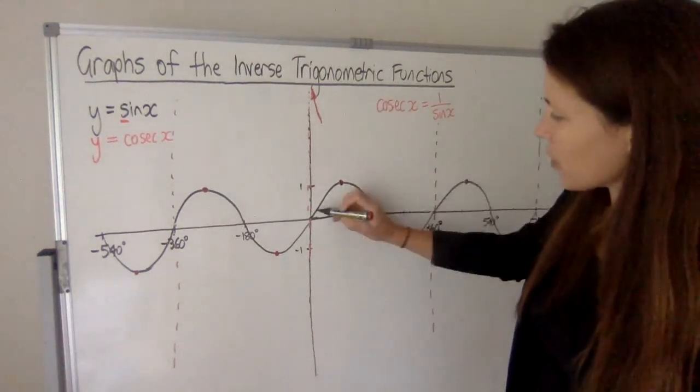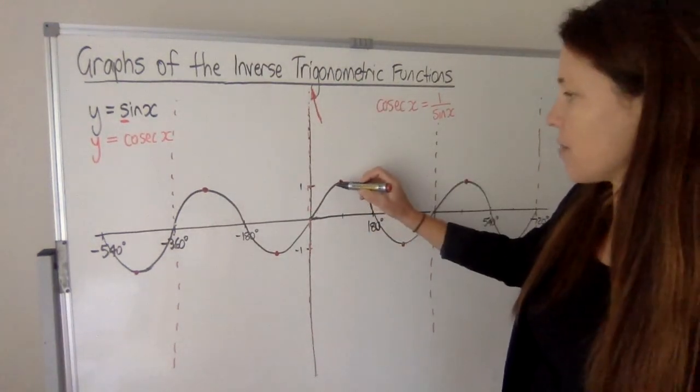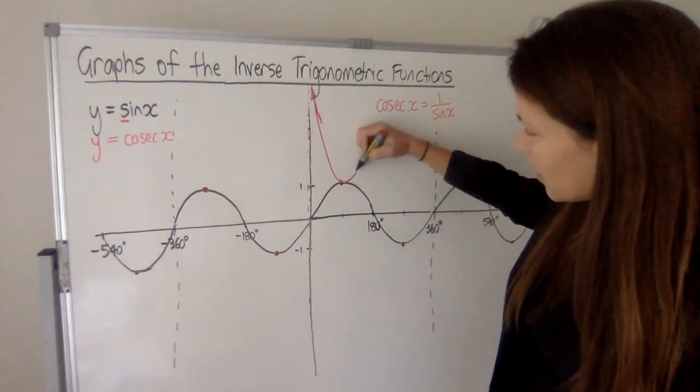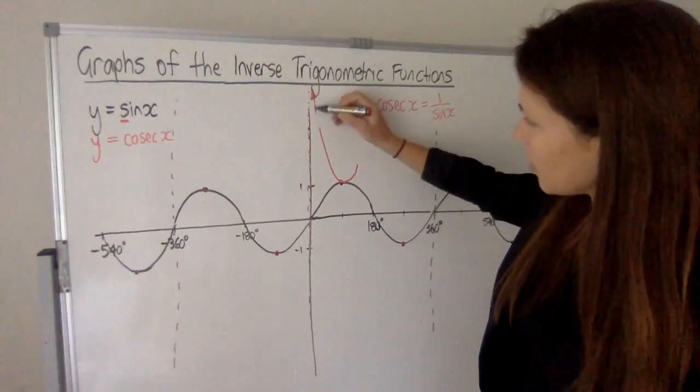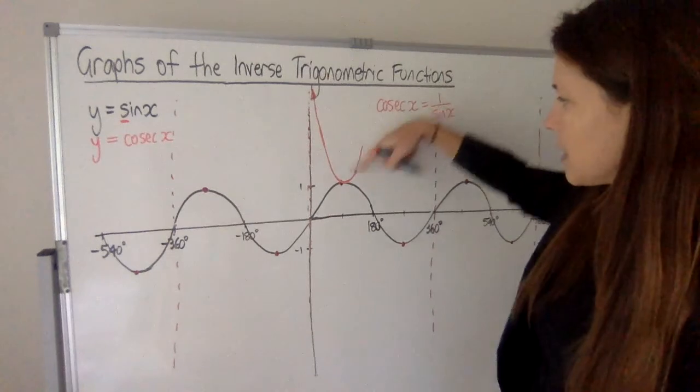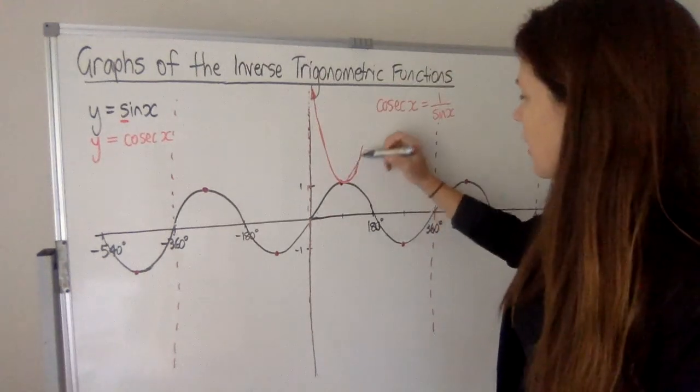Now, as we get closer and closer to sine of x being 1, cosec x is going to get closer and closer to 1 as well. So they're going to come down here. The graph is going to come down here and sort of echo that curve, but upside down. Okay. So it's going to head up like that.